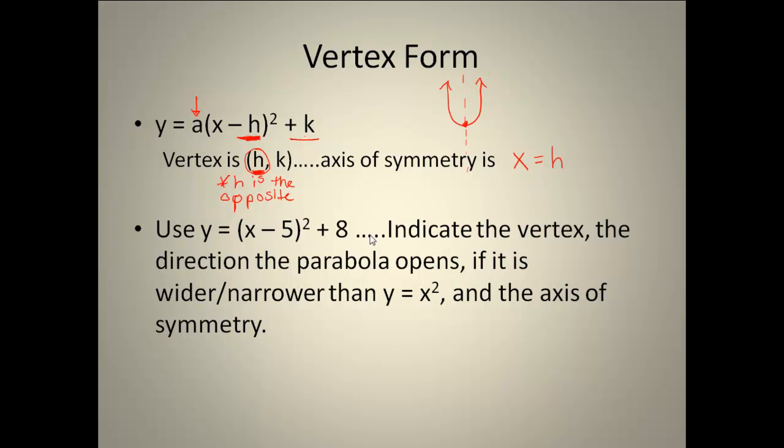Here's an example we'll use. First thing it wants us to do is indicate what the vertex is. Well, I've identified where my h and my k are and I have to remember to take the opposite of the h. So instead of looking at it as a negative 5, my vertex would be at positive 5. Then my k is a positive 8 and I just keep the sign with it. So my vertex is at positive 5, positive 8.